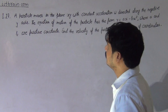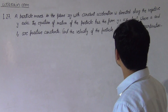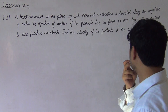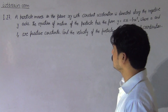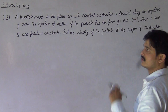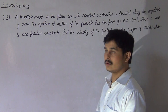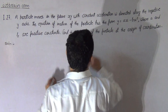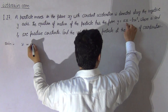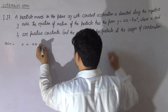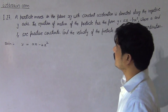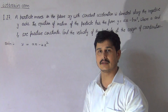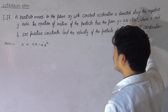This is problem 1.27. A particle moves in the plane xy with constant acceleration w directed along the negative y-axis. The equation of motion of the particle has the form y = ax - bx², where a and b are positive constants. Find the velocity of the particle at the origin of coordinates. According to the given condition, the y-coordinate is related to x-coordinate by y = ax - bx². Constant acceleration means the magnitude of acceleration is constant.